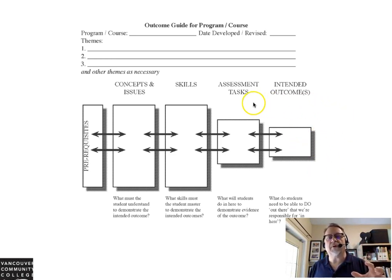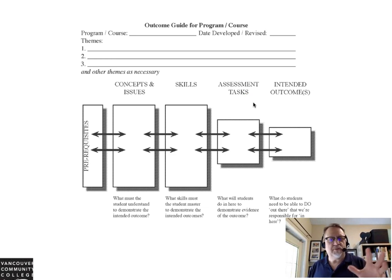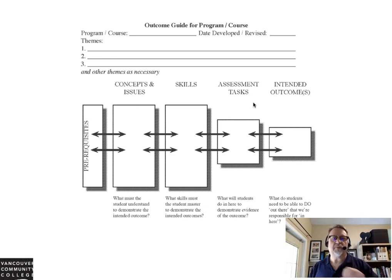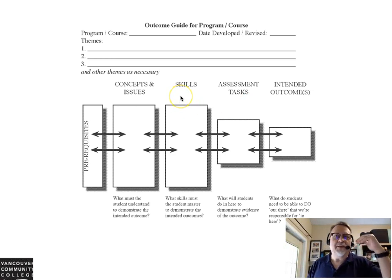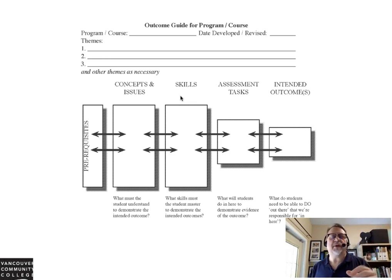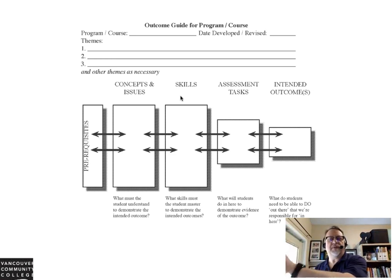From these learning outcomes, you then focus on the assessments that you'll do to show whether or not they've satisfied that outcome. Then you also identify the activities or the skills and abilities that are necessary for the student to be successful in achieving that outcome.